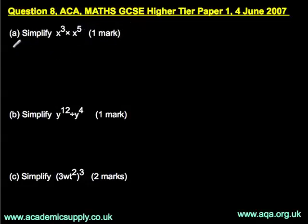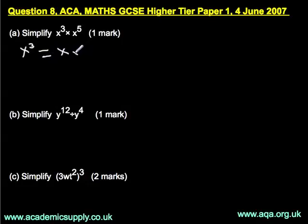First of all, what is x to the power of 3? Well, x to the power of 3 is actually x times x times x. So those big x's are x's, and those small ones are the times multiply sign. That is what x to the power of 3 means.